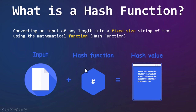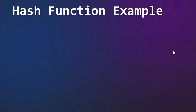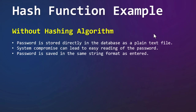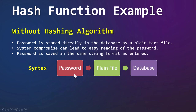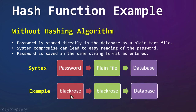There can be many formulas that can be used to hash a message. Let's understand the hashing process with a real-life example. First, let's see what would happen if no hashing algorithm is used for password storage. In this case, the password is stored directly in the database as plain text. Now if the system is compromised, it can lead to easy reading of the password — any hacker can read the password in plain text because it is not encrypted. For example, if we have a password 'black rose', it is stored in the file as-is and the file is stored in the database.